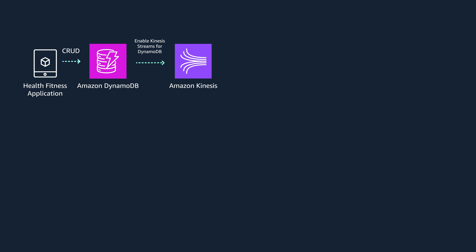You have an application built on DynamoDB. You enable Kinesis streams at a table level. With this, the table sends out a data record that captures any changes to data in DynamoDB. This data record includes the specific time an item was updated, the item's primary key, and images of the item before and after the modification. These data records are captured and published in near real-time to Kinesis.